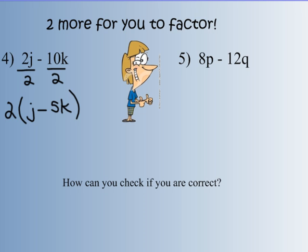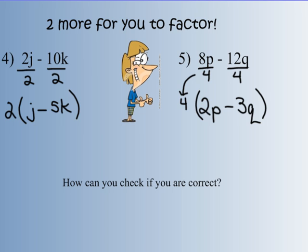Number 5 — 8p minus 12q. 8 and 12 have a 4 in common, so I'm going to pull out that 4. 8p divided by 4 gives me 2p, and negative 12 divided by 4 gives me negative 3q. Put parentheses around that. The factor they have in common goes out front. So I have 4 times the quantity 2p minus 3q.